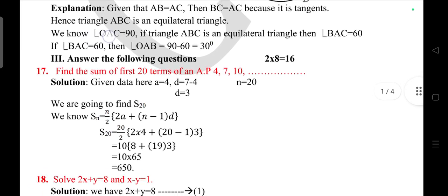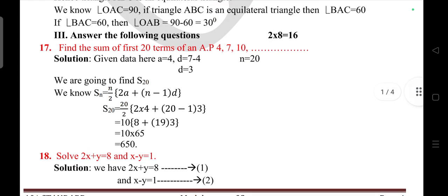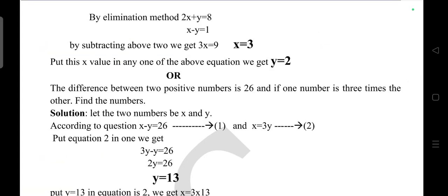Next main, third main, two mark questions, eight questions will be there. Question 17: Find the sum of 20 terms. You have to find a₂₀. AP is given: 4, 7, 10. Here is the answer. Question 18: Solve 2x + y = 8 and x - y = 1. Take equation 1 and 2, solving by substitution method will get the value of x and y.